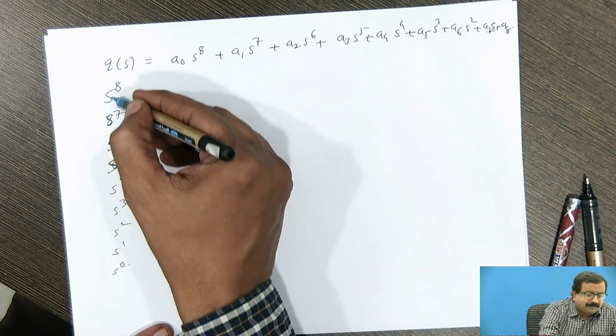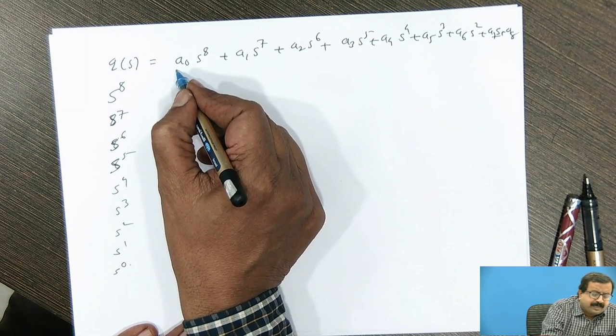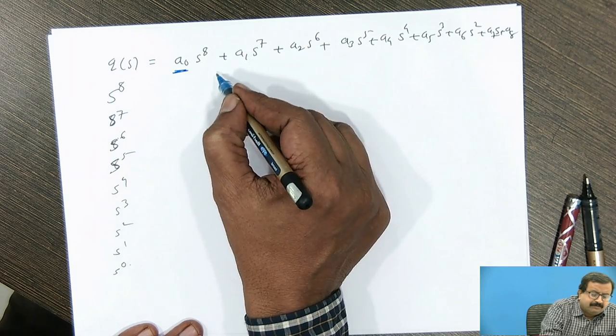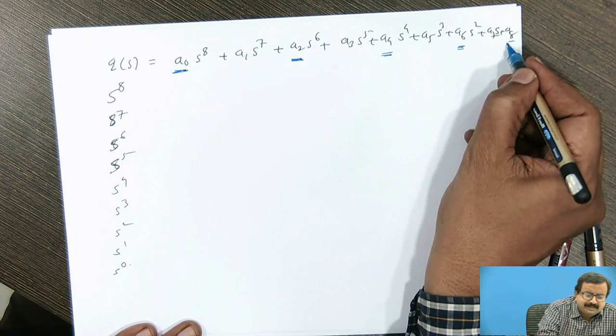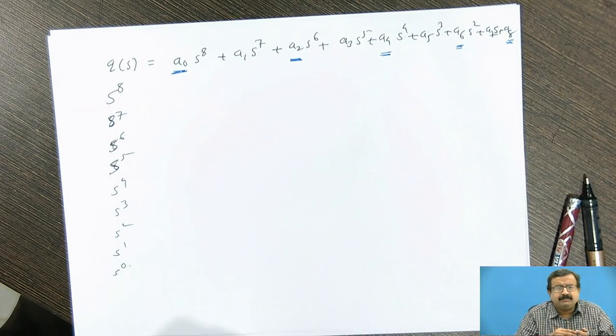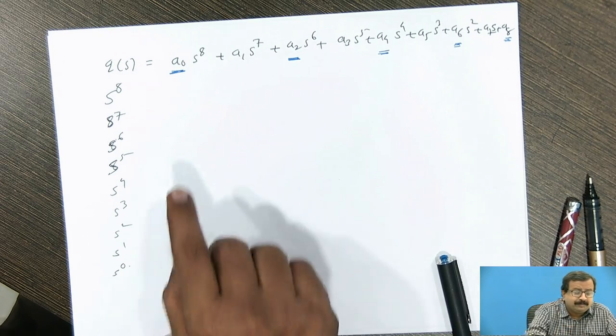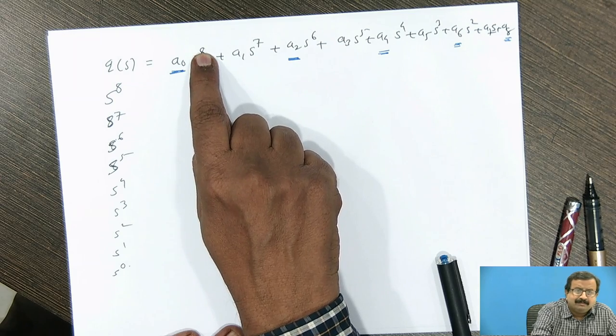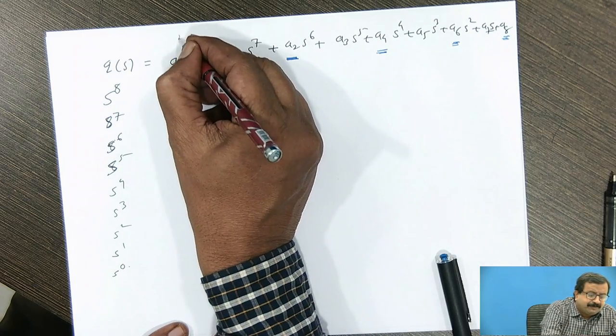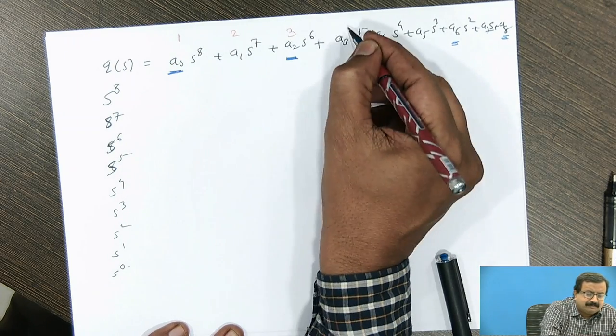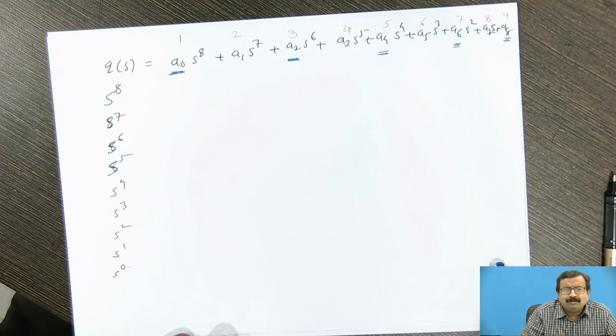So he says that after writing this in the vertical direction, s raise to 8 to s raise to 0, what we have to do? We have to first write the coefficients of odd number terms. This is 1st term, this is 3rd term, this is 5th term, this is 7th term and this is 9th term. See, I have underlined with blue color the terms. See, I am not taking the, looking at the power. Power may be even, but this is the odd term. Why odd term? Because if I write here, this is my 1st term, this is my 2nd term, this is my 3rd term, this is my 4th term, this is my 5th term, 6th, 7th, 8th and 9th term.